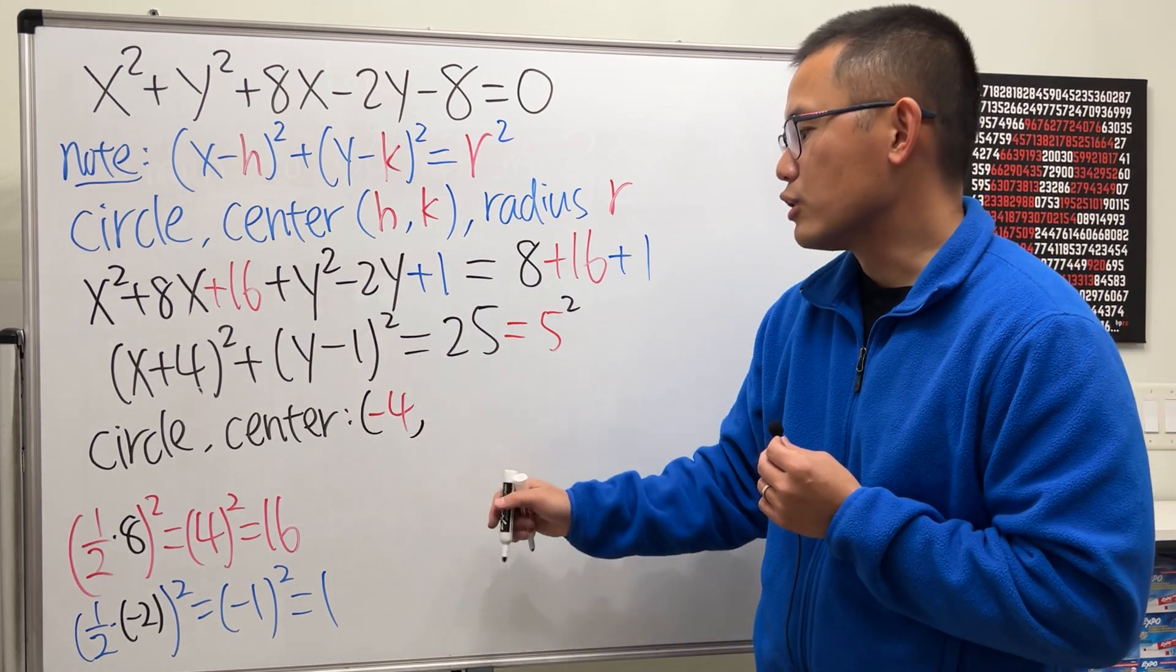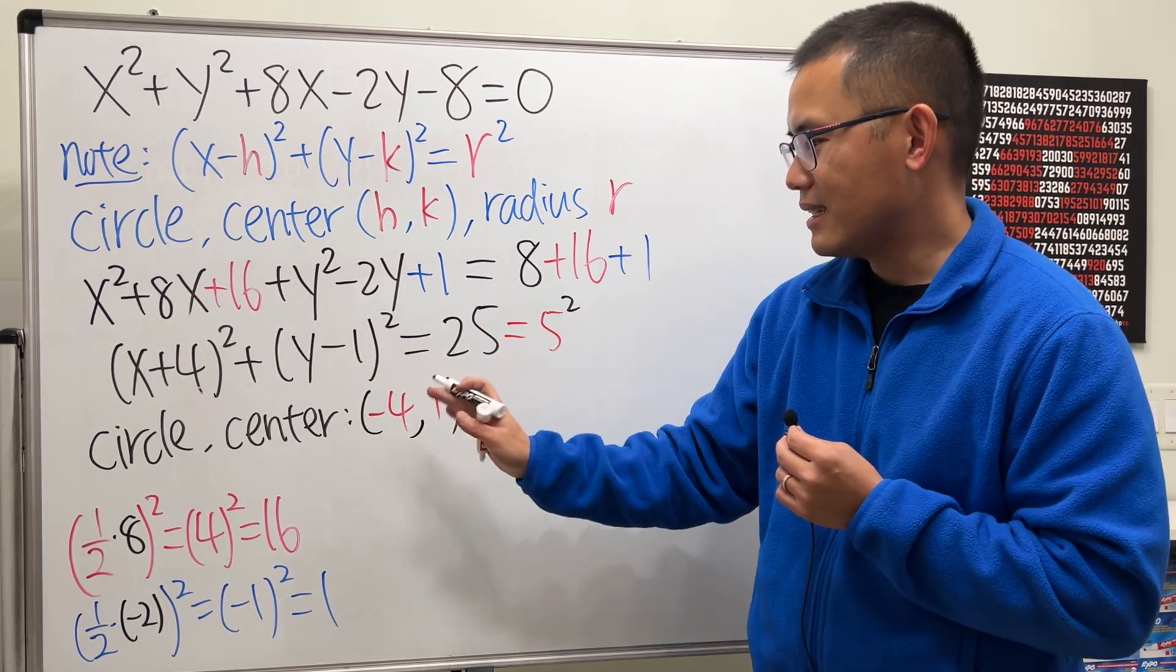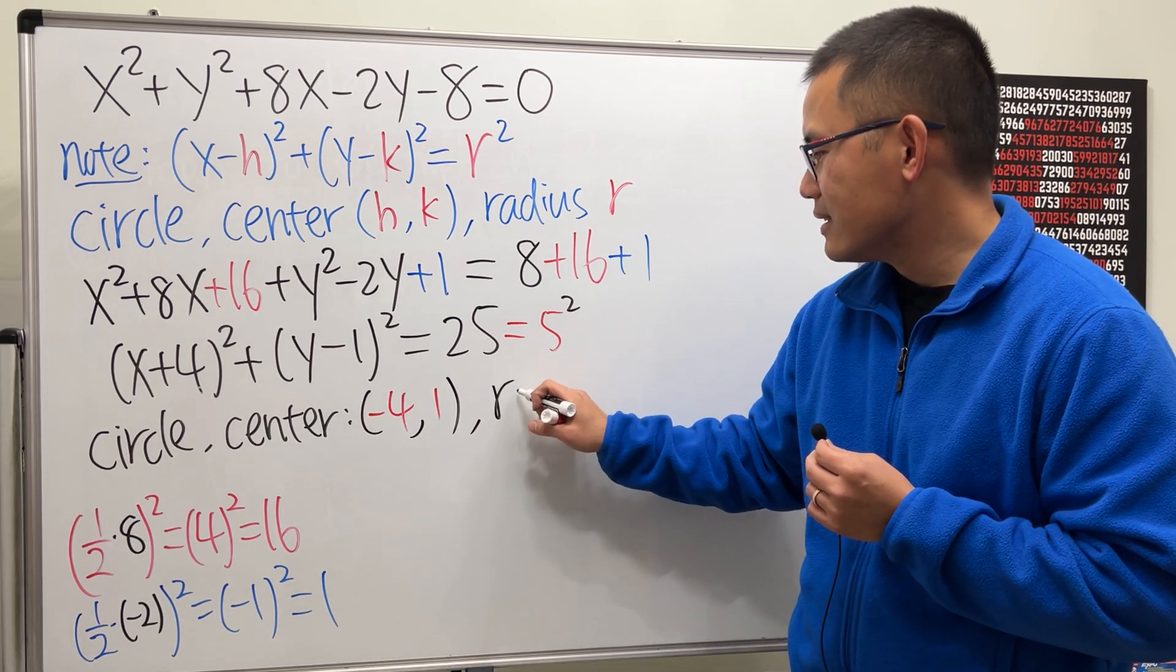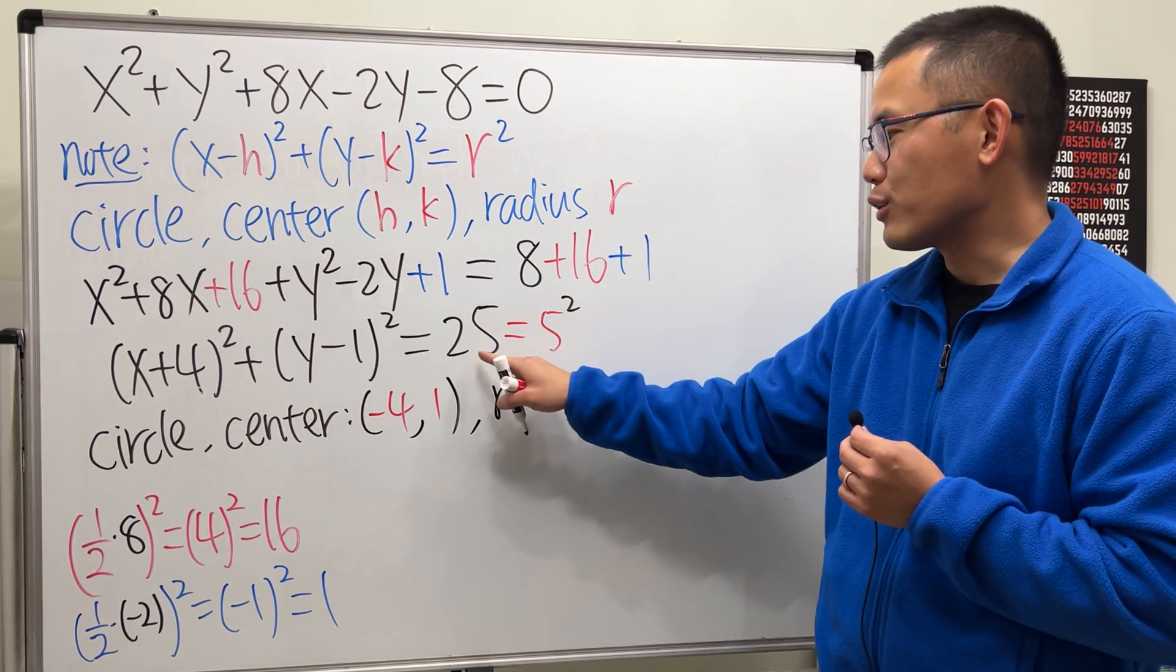And if you have minus 1, it's just going to be positive 1. That's the center. And the radius is just equal to 5, not 25, 5.